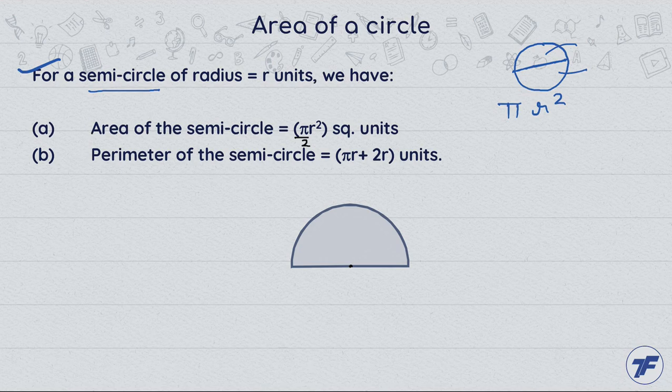Now let's discuss: if the complete circle's area is πr², then what will half be? Half will be πr²/2, which means πr²/2 is the area of the semicircle.